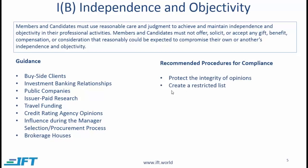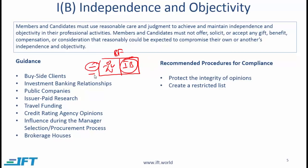Next, create a restricted list. Going back to the brokerage firm scenario: if two of the pharmaceutical companies you follow also happen to be firms being approached by your firm's investment banking group, one step your organization can take is to put those two firms on a restricted list. That means you will not write or present opinions on those companies — you will simply publish factual reports — and this helps avoid the potential conflict under investment banking relationships.